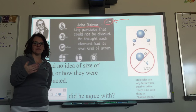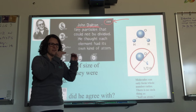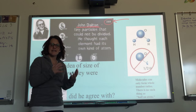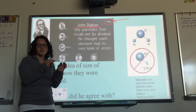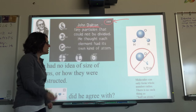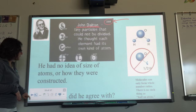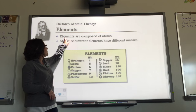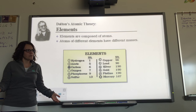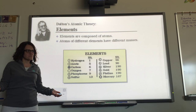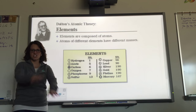He came up with a number of theories that we can actually relate to current times — which is amazing because it's the 1800s. There are a couple we now know aren't totally correct because technology has advanced, but most hold up. The first theory: elements are composed of atoms. Do we agree with that? Yes. If I have an element of carbon, it's made out of carbon atoms.